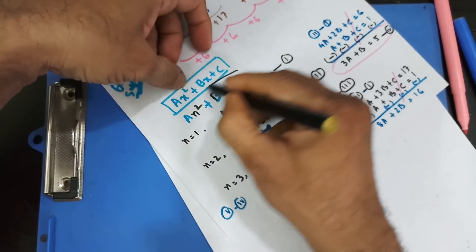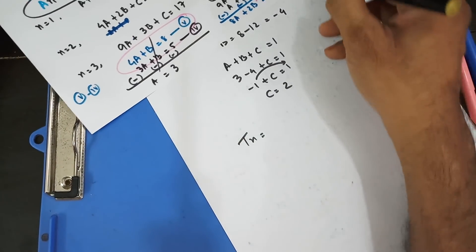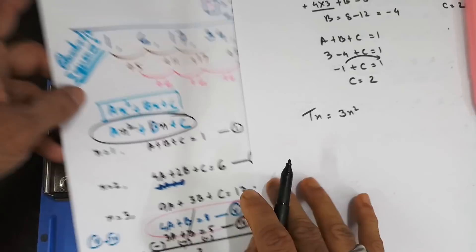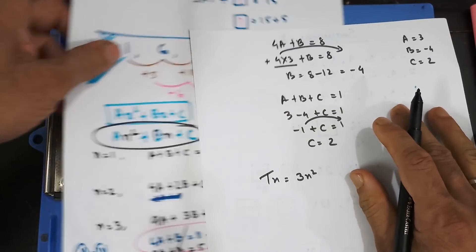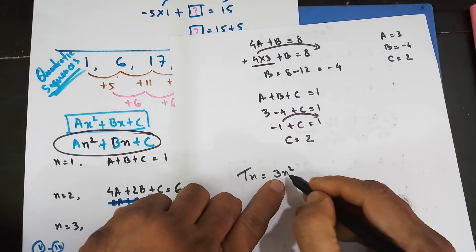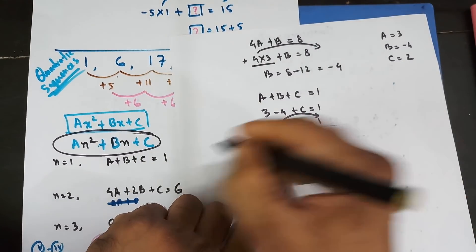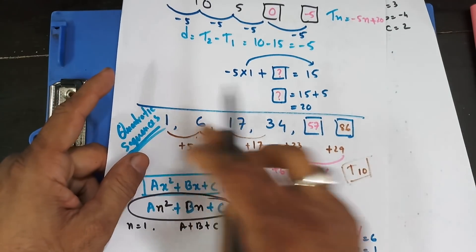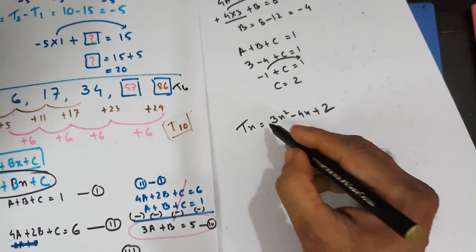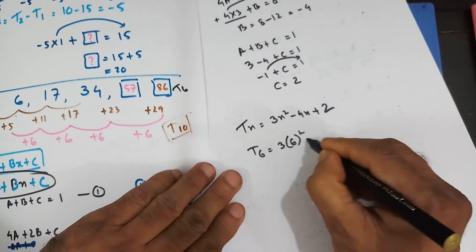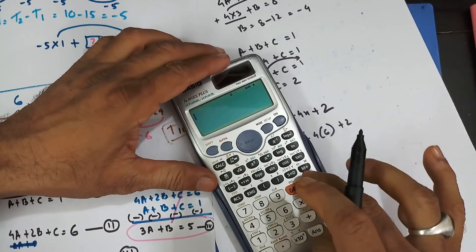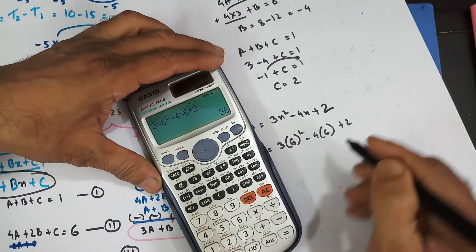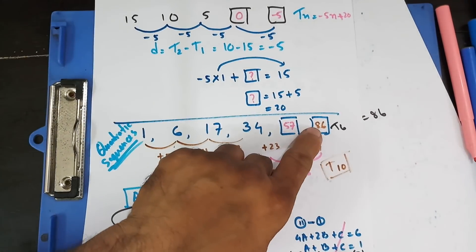So my nth term is: T(n) = 3n² − 4n + 2. Let's verify with the 6th term: T(6) = 3 × 6² − 4 × 6 + 2 = 3 × 36 − 24 + 2 = 108 − 24 + 2 = 86. And we did find 86 as the 6th term earlier. So this is one way to find the nth term.